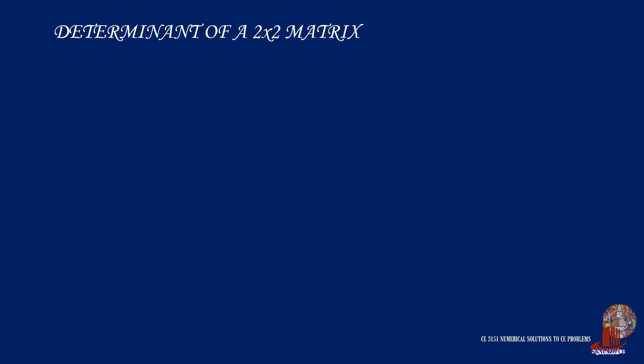Solving the determinant of a 2x2 matrix is much simpler than bigger size matrices. For a matrix with elements A, C, B, and D, the determinant is solved using the diagonals. One starts from the top left sliding down — in this case from A to D — and this is considered positive. We then subtract the opposite diagonal, starting from the bottom left to the top right, in this case B times C.